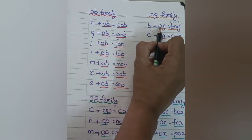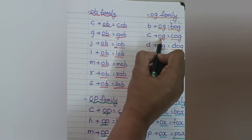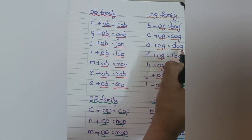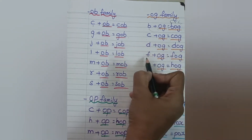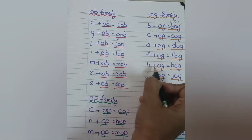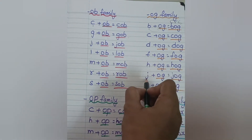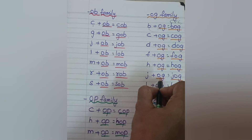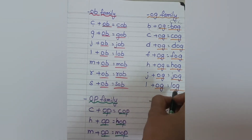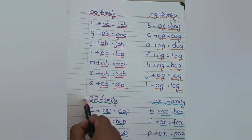B, OG — bog. K, OG — cog. D, OG — dog. F, OG — fog. H, OG — hog. J, OG — jog. L, OG — log.